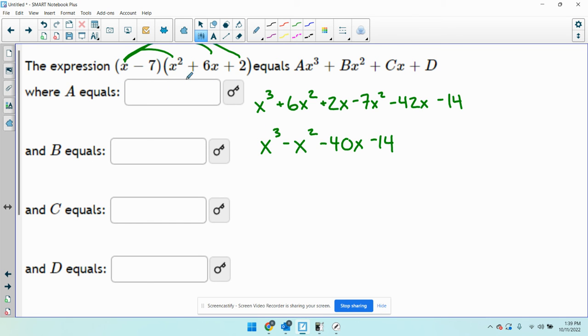So now I'm just going to write each coefficient out in these boxes. The coefficient a is the number in front of the x cubed, which is just going to be 1, but it's not written. The number in front of the x squared term is going to be negative 1 because of the minus. The number in front of the x is negative 40. And the number by itself is negative 14. And that's going to be your answer.